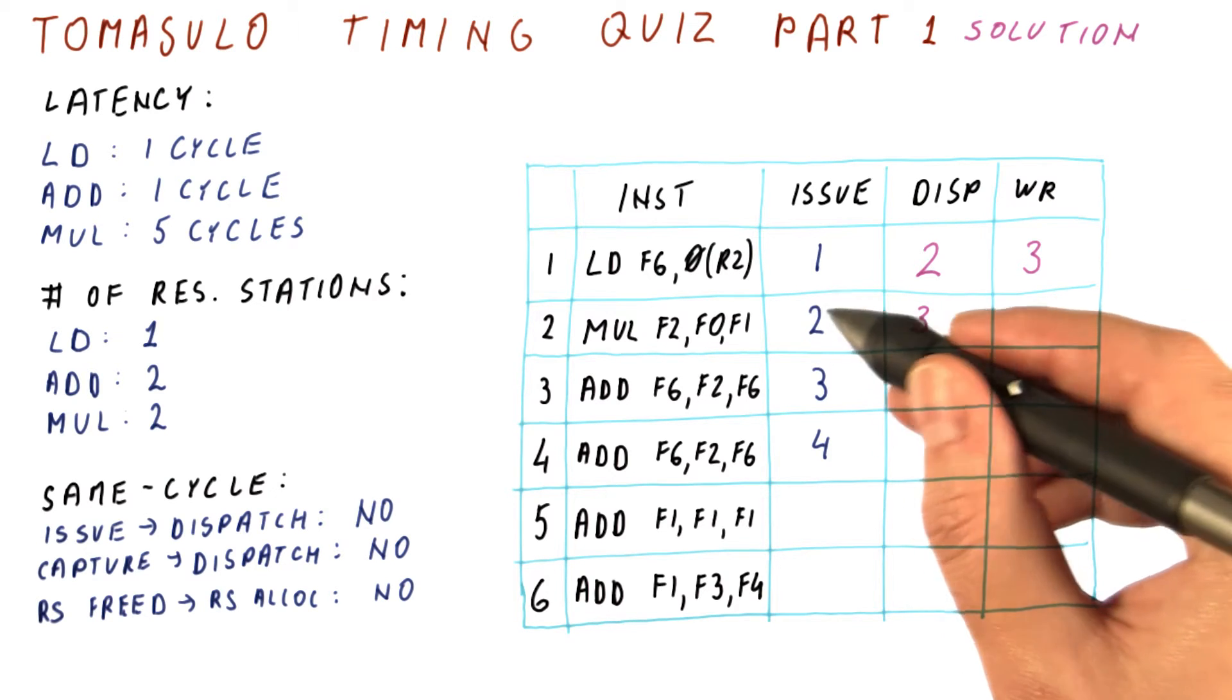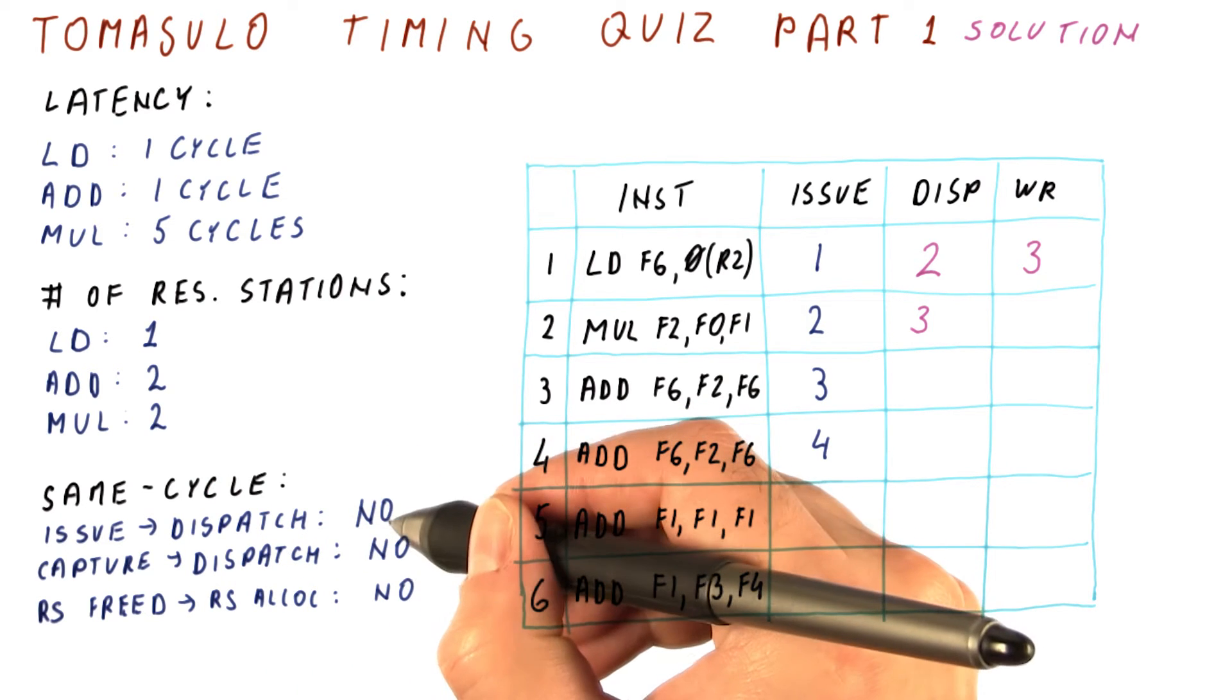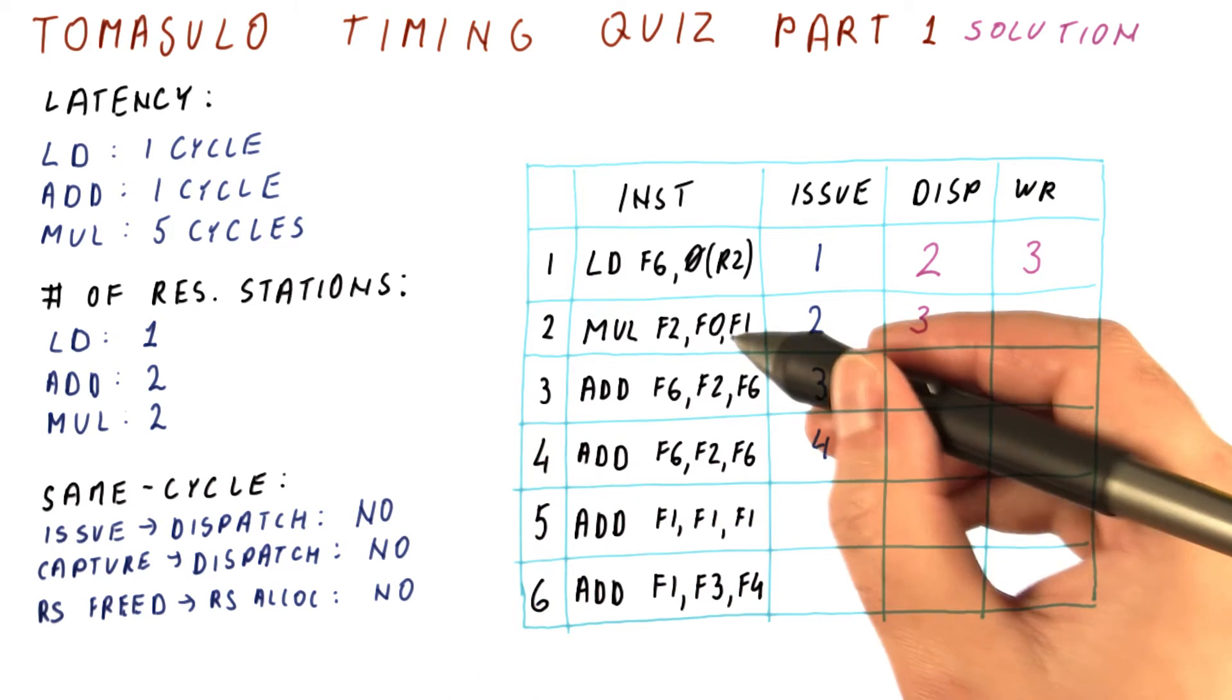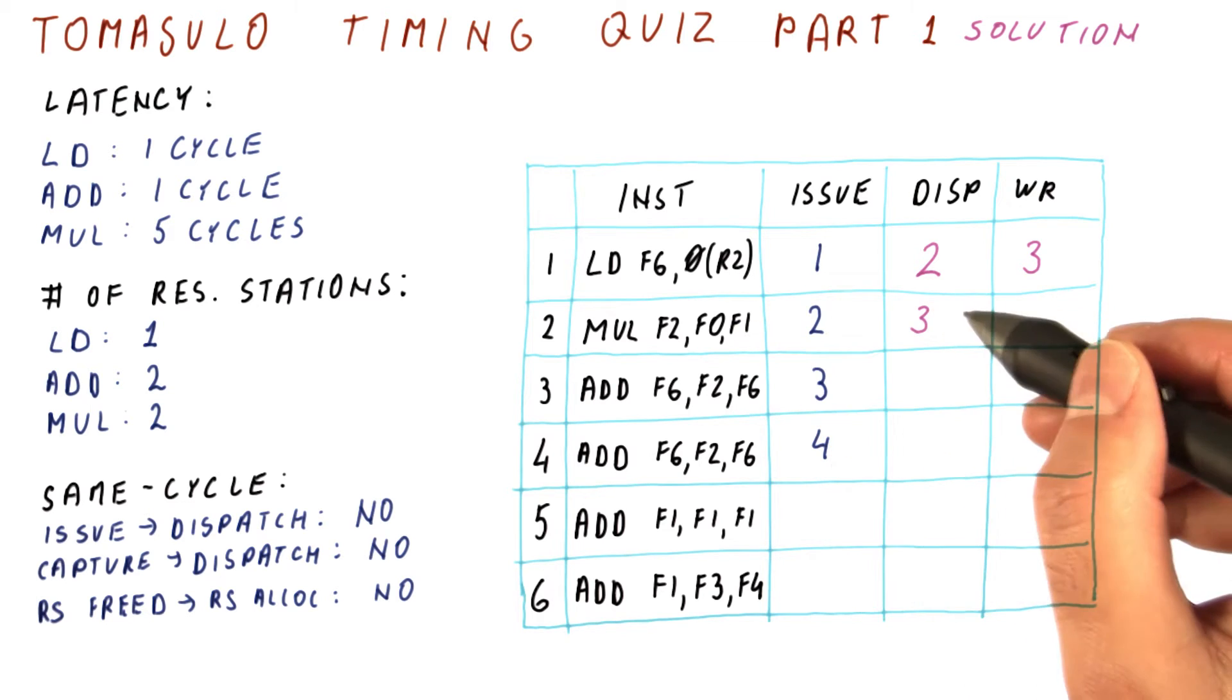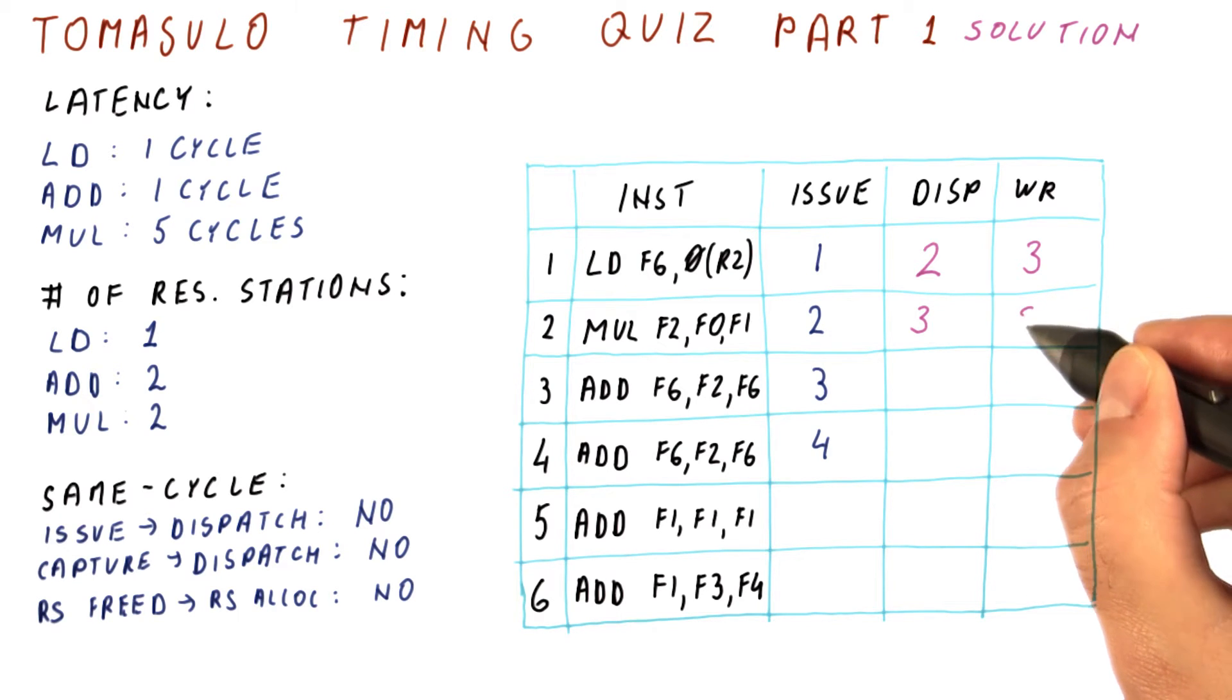It couldn't issue and then dispatch in cycle two because issue and dispatch in this processor is not allowed in the same cycle. The multiplication takes five cycles to do, so if it dispatches in cycle three to execute, it's going to be broadcasting its result in cycle eight.